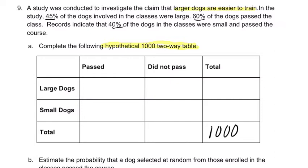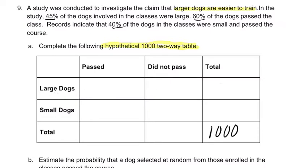45% of the dogs involved were large, so here's our large column. The total is 45% of 1,000, that's 450. And then you can add up the difference to get 550 for the number of small dogs.